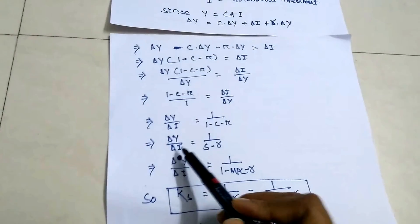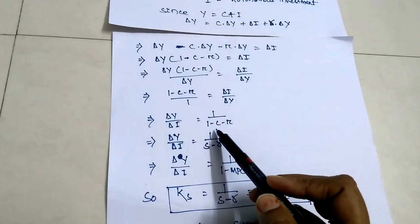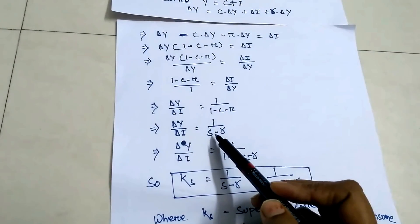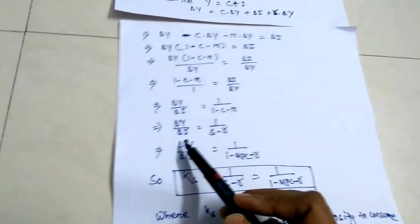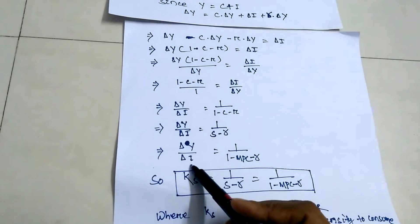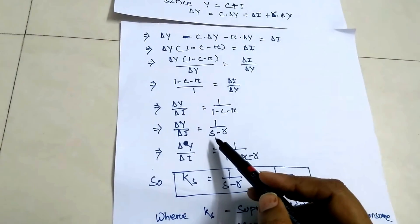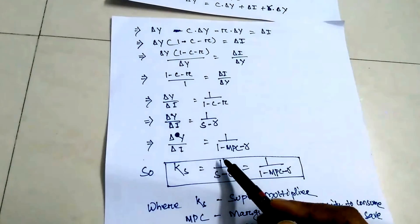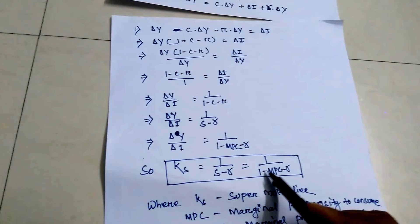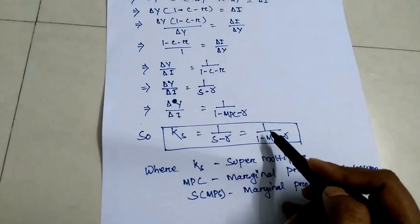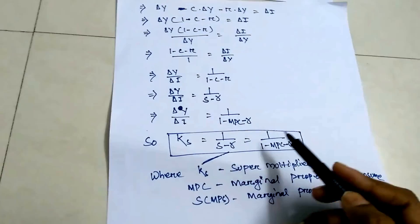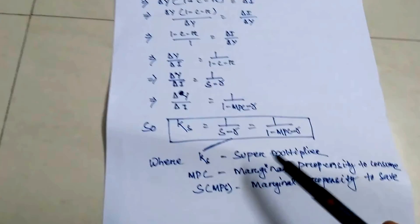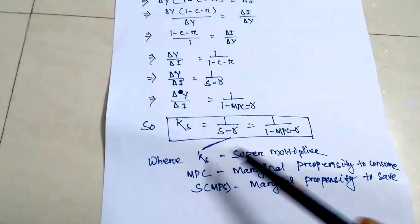Since saving plus consumption equals 1, we know 1 minus C equals S, where S is the marginal propensity to save (MPS). Therefore, change in Y divided by change in I equals 1 divided by (1 minus MPC minus r), or equivalently 1 divided by (S minus r). This is denoted as Ks — the super multiplier formula. Remember, the super multiplier is a combination of the accelerator and multiplier, and it is denoted by Ks.